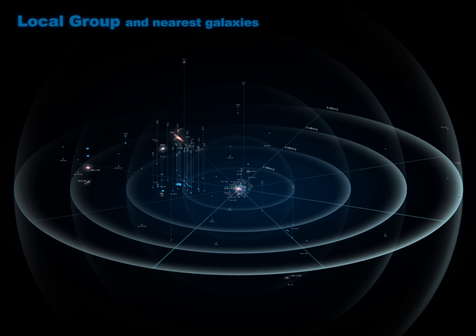The term 'the local group' was introduced by Edwin Hubble in Chapter 6 of his 1936 book The Realm of the Nebulae. There, he described it as 'a typical small group of nebulae which is isolated in the general field' and delineated, by decreasing luminosity, its members to be M31,